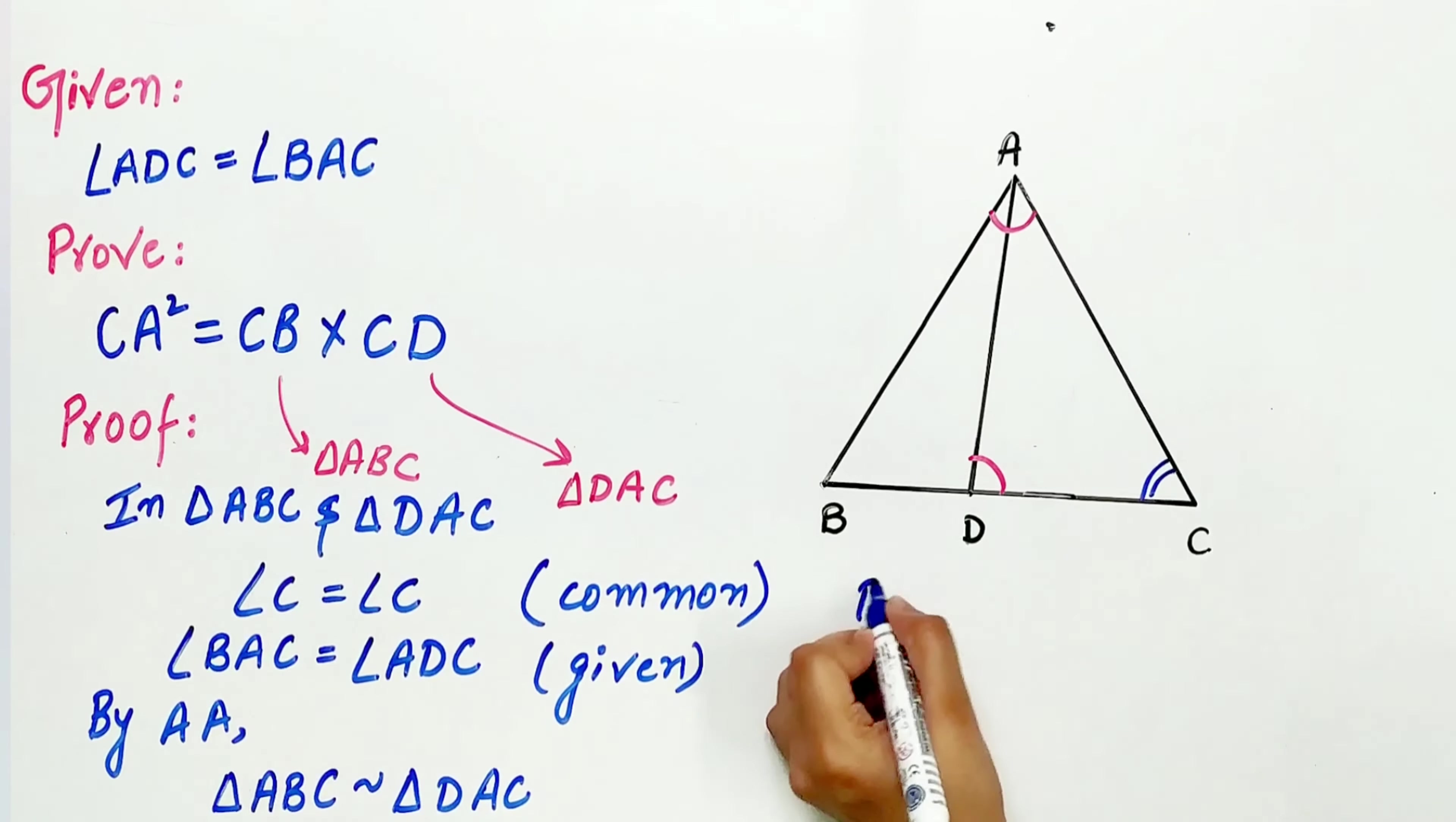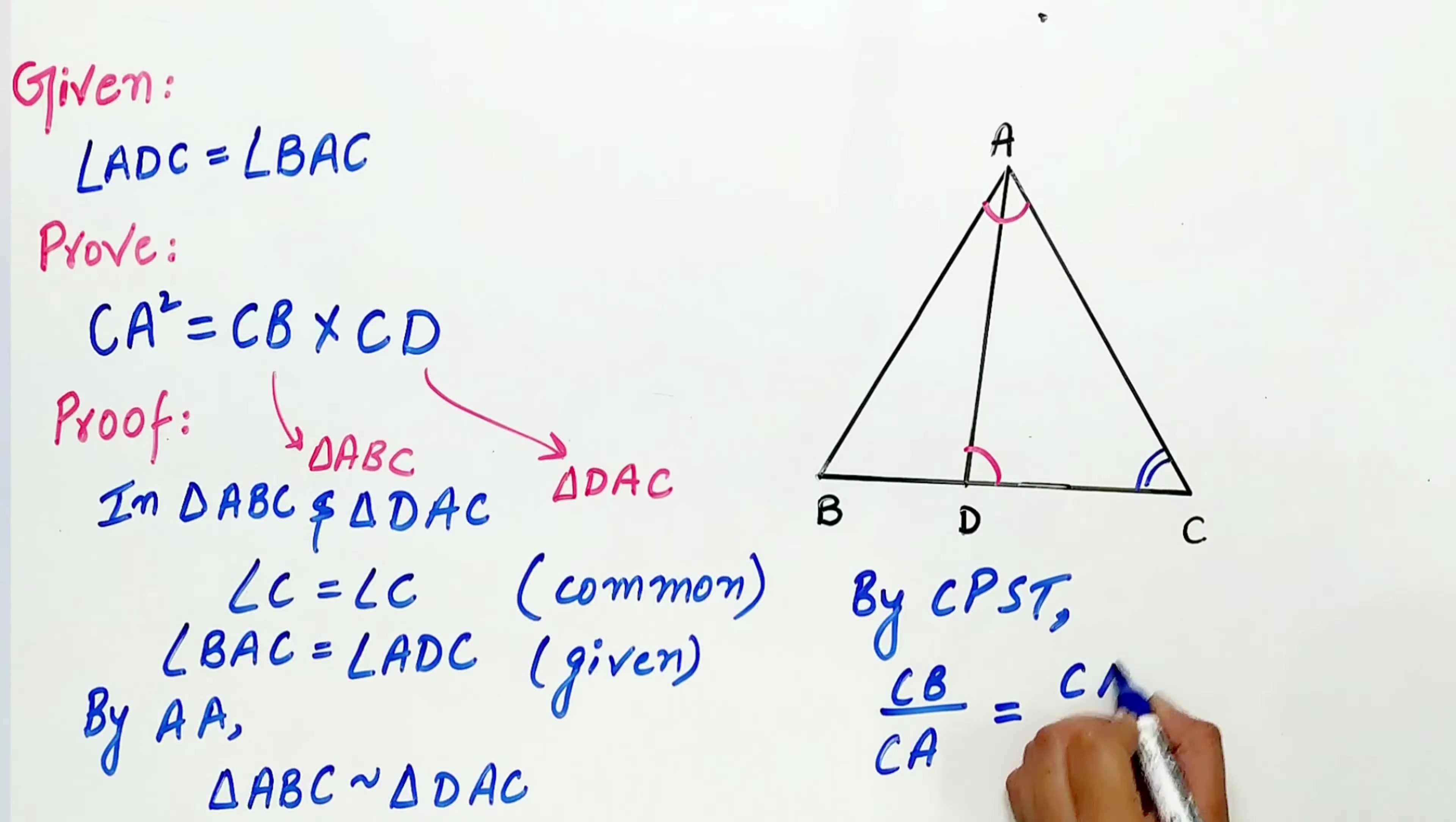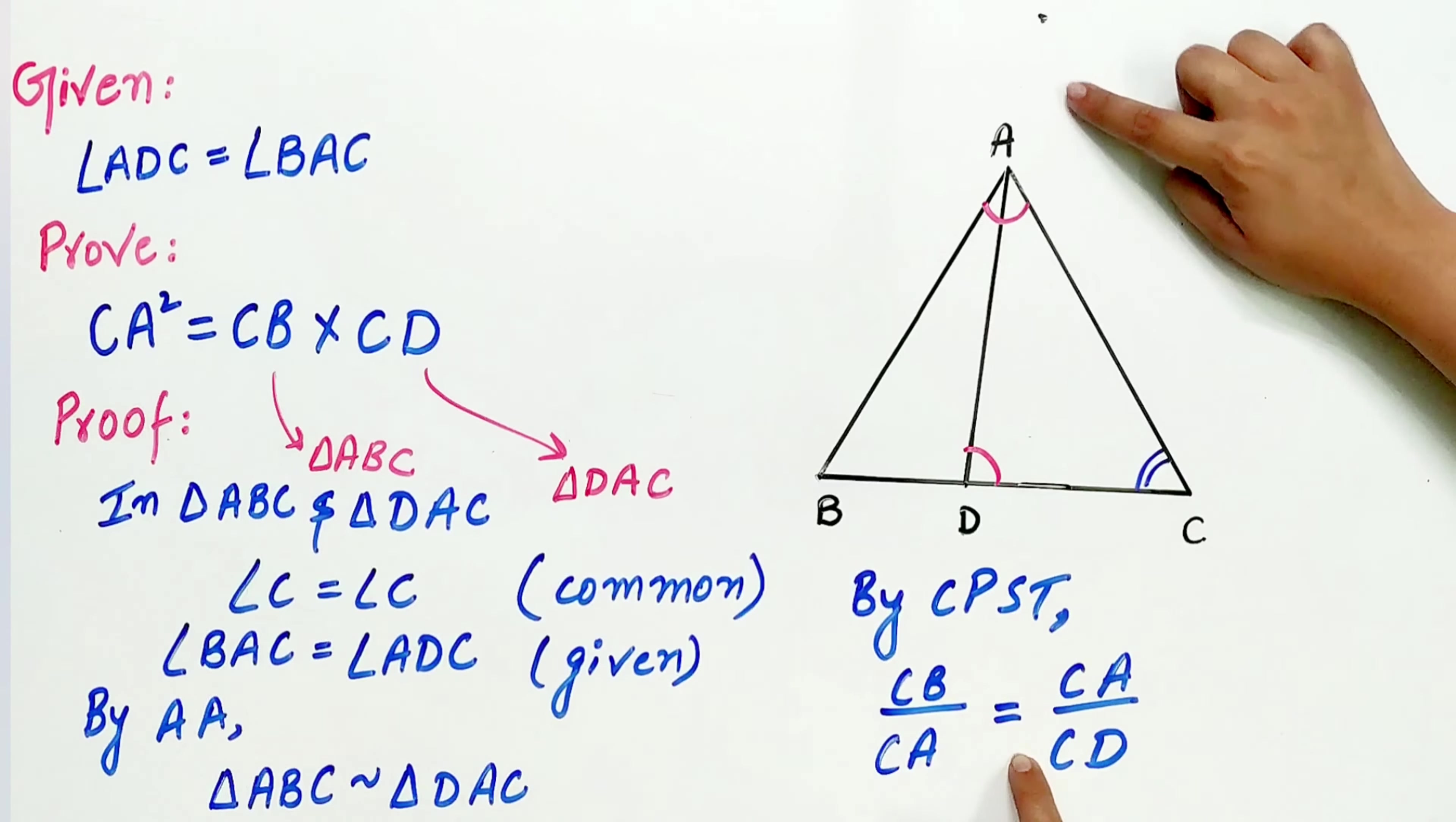And by CPST, that is corresponding parts of the similar triangles, CB by CA is equal to CA by CD. Now look carefully: CB by CA is equal to CA by CD.